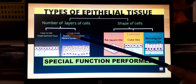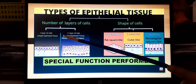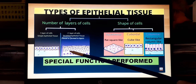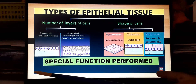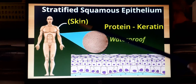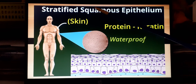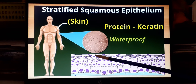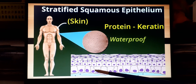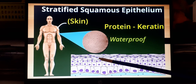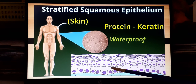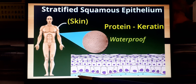If layers of cells are arranged in more than one layer it is called stratified epithelial tissue. The best example is the skin, called stratified squamous epithelium, where cells are arranged in many layers. From bottom to top, the dimensions of the cells keep on changing, with the lowermost layer resting on the basement membrane.